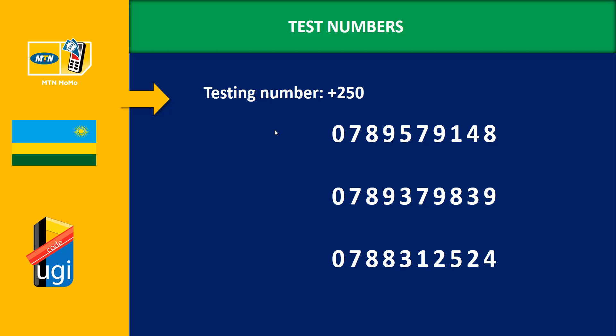These are the test numbers — you can find most of them in the documentation, and the link will be provided at pogeecode.com under the MTN API section. One good thing with the Rwanda API is you have the ability to have a virtual currency for testing. There are three test numbers you can take note of, or copy from the website.